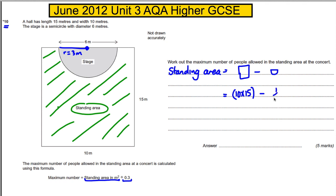The area of a full circle is πr², so the area of a semicircle is ½πr². Here r is 3 — be very careful to use r = 3 and not 6. The rectangle area is clearly 150, and working out the semicircle area on a calculator gives 14.137.